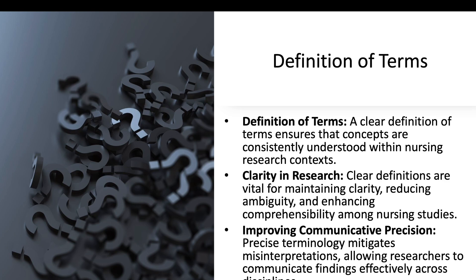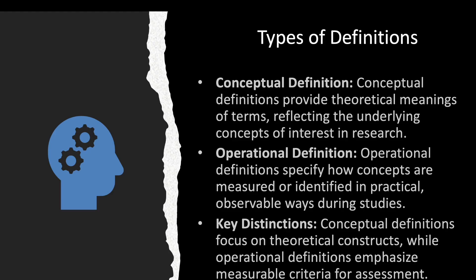Conceptual definition provides the theoretical meaning of a term, reflecting the underlying concepts of interest in research. Operational definition specifies how concepts are measured or identified in practical, observable ways during studies. Conceptual definitions focus on theoretical constructs, while operational definitions emphasize measurable criteria for assessment.